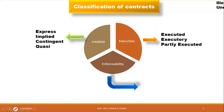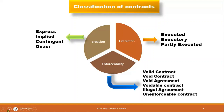The third classification is enforceability. On that basis, there are six classifications: Valid Contract, Void Contract, Void Agreement, Voidable Contract, Illegal Agreement, and Unenforceable Agreement. Now we will see these one by one.